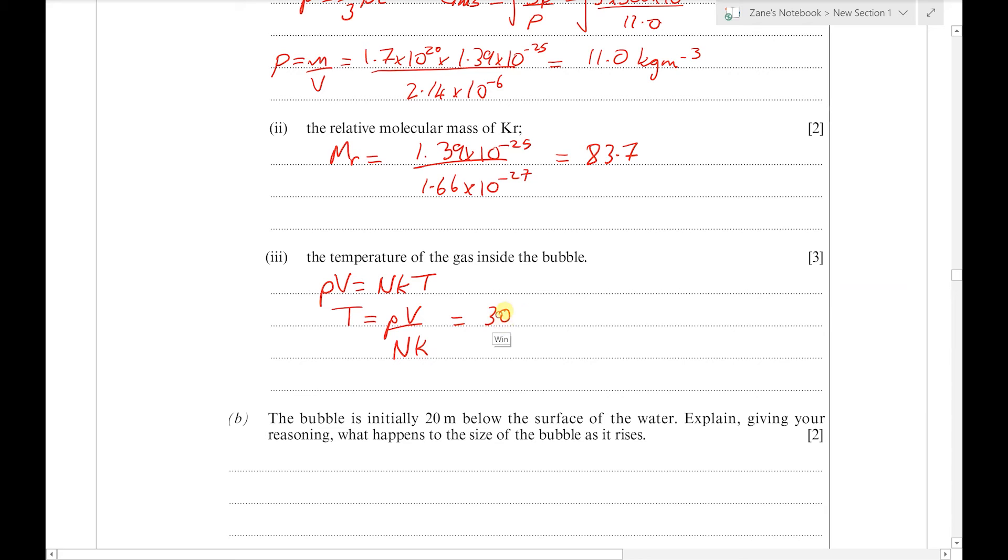The pressure was 300 × 10³, the volume was 2.14 × 10⁻⁶, the number of molecules was 1.7 × 10²⁰, and Boltzmann's constant is 1.38 × 10⁻²³.